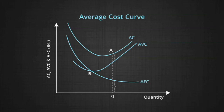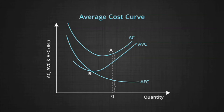Since TFC remains constant irrespective of the level of output, AFC decreases with the increase in the level of output. As a result, the difference between ATC and AVC decreases with the increase in output. But AFC can never be zero, so even with increasing output, AC will always lie above AVC — AVC and AC never intersect. Both AC and AVC are U-shaped curves, but the minimum point of AVC is always before the minimum point of ATC, as ATC also includes AFC, which declines continuously. So the decline in ATC far exceeds the decline in AVC.